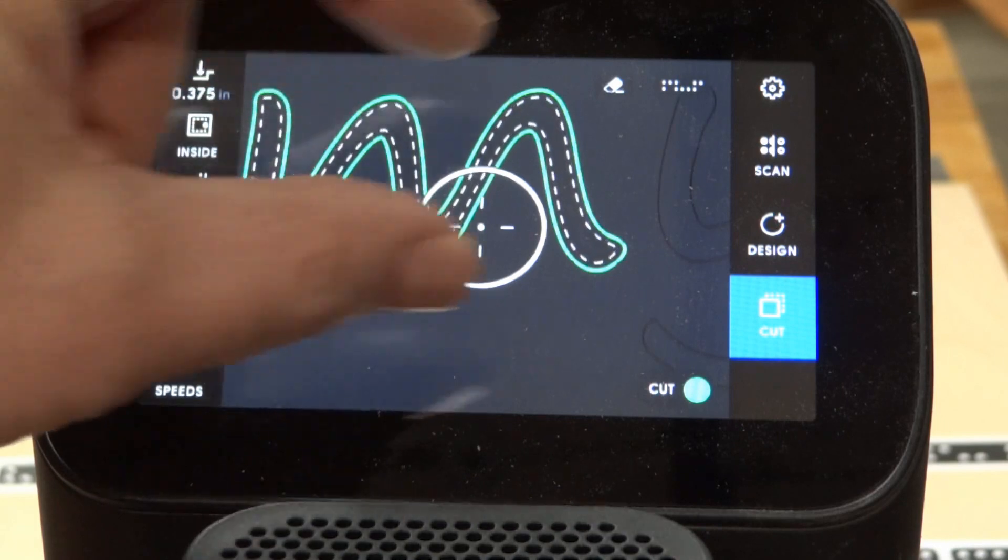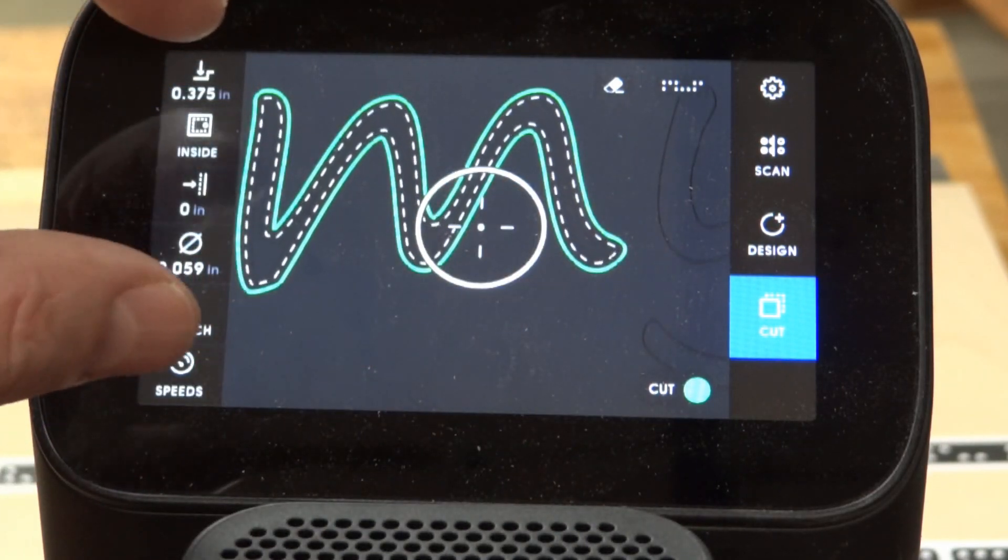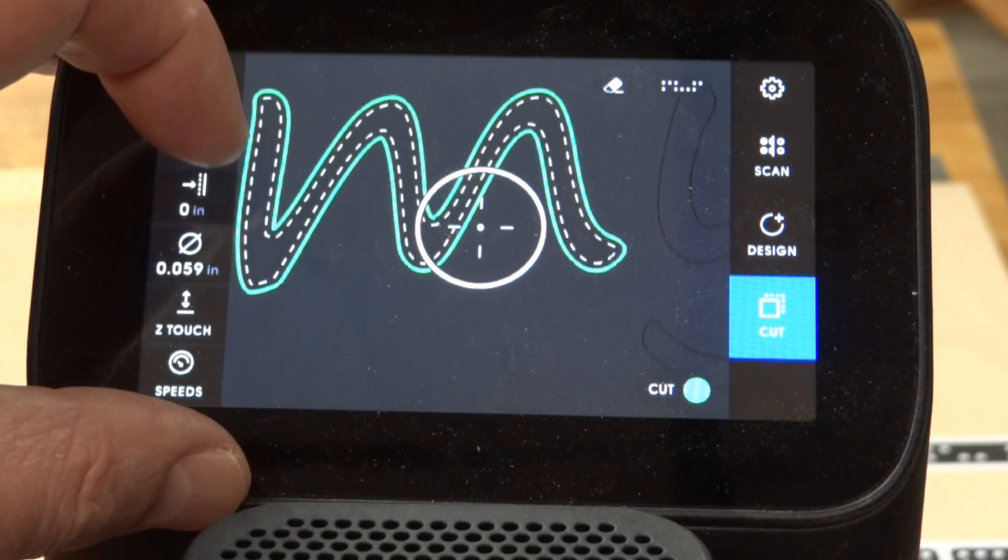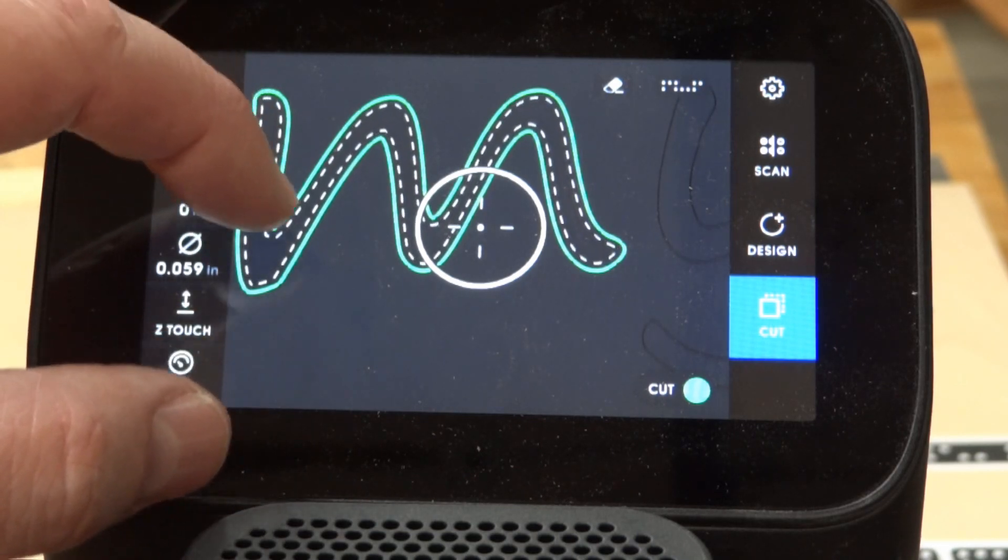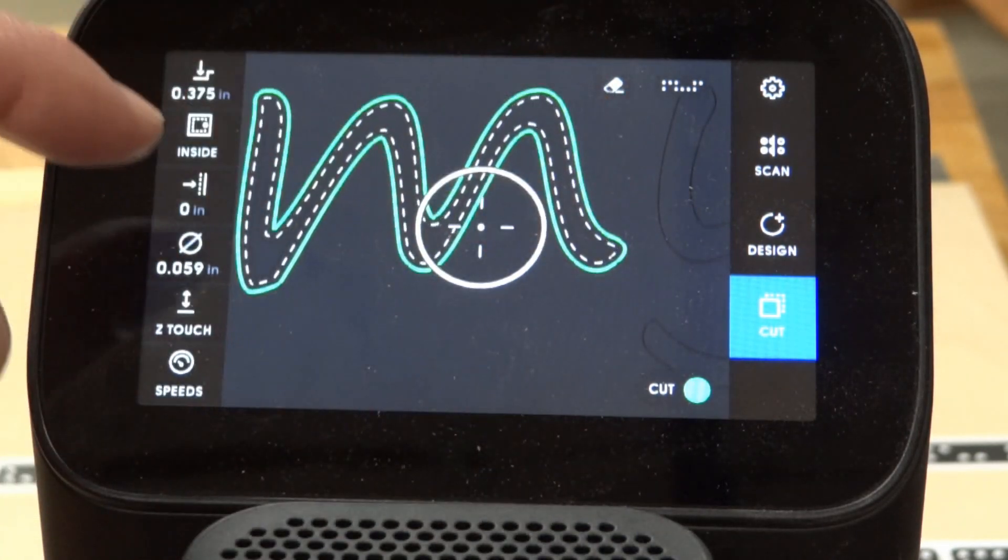And when you color code it, the Shaper says, okay, this is going to be an inside cut. And you can see that the cutter is able to make the entire path.